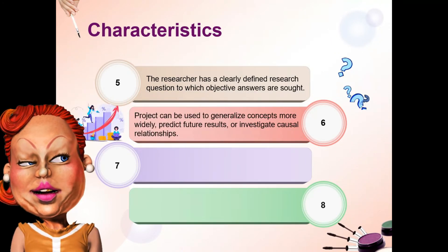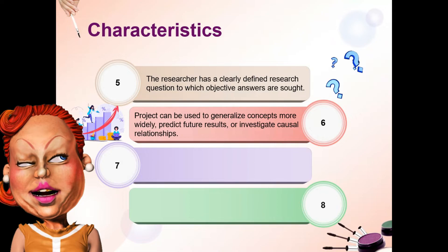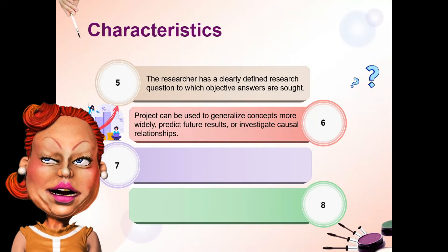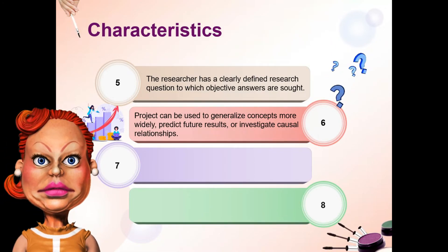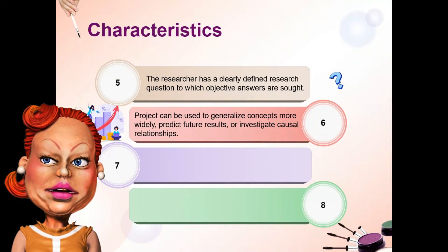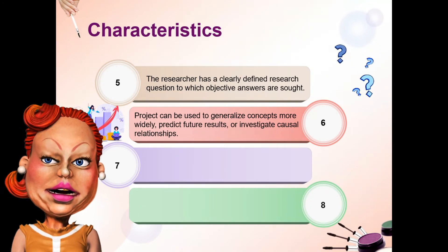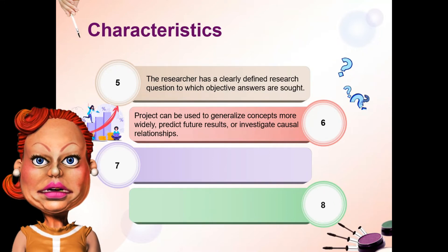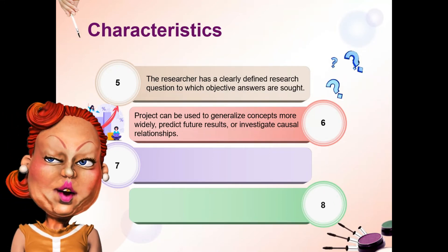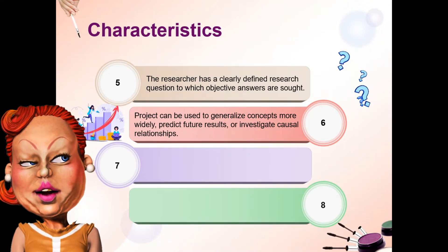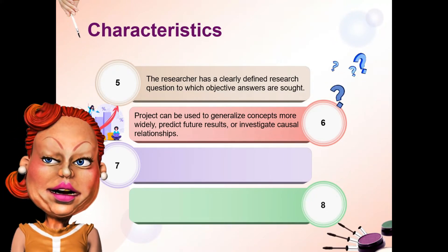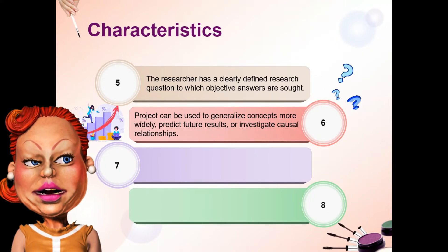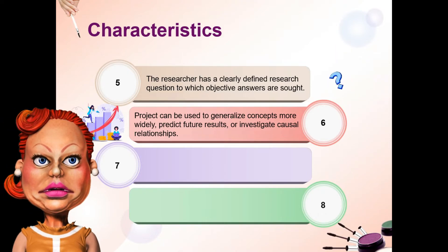Quantitative research can be used to generalize concepts more widely, predict future results, or investigate causal relationships. Dahil ang quantitative research ay gumagamit ng numbers, at alam naman natin na sa math, lagi may mga pattern — ganun din sa research. Gamit ang mga numbers, mapepredikta ng quantitative research ang mga possible na mangyayari depende sa trends ng data. Ang galing, diba?